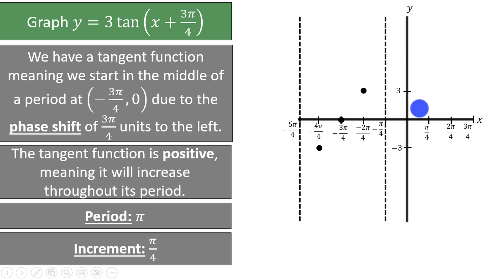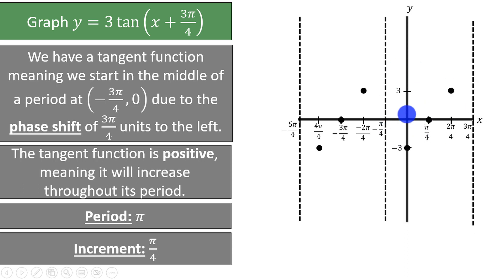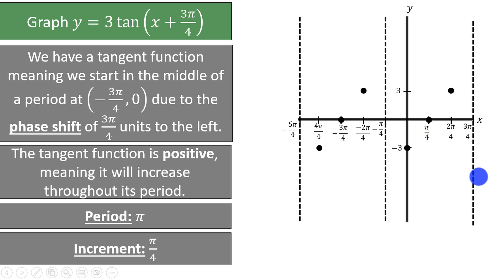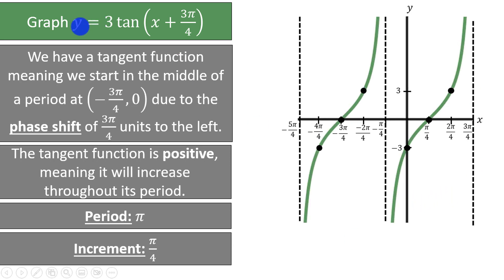Then we will have one more period which will be identical. At 0, we will be at negative 3. At pi over 4, we will be at 0. At 2pi over 4, we will be at 3. And at 3pi over 4, we will have another asymptote. We can connect the dots to draw the graph of y equals 3 times the tangent of x plus 3pi over 4.